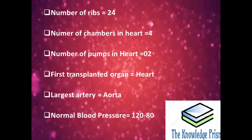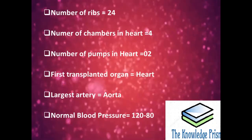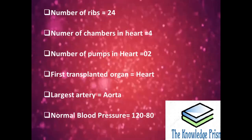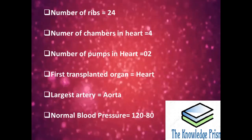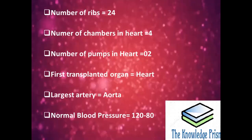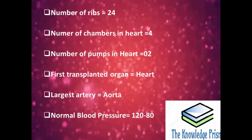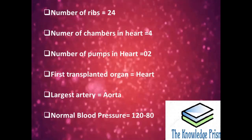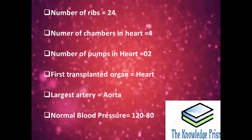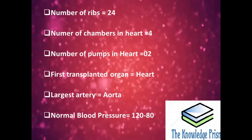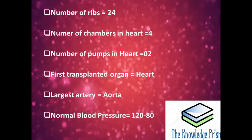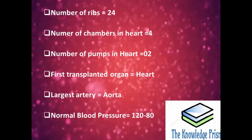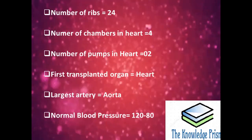Number of chambers in heart are 4. Number of pumps in heart are 2. First transplanted organ was heart. Largest artery is aorta. Normal blood pressure is 120 over 80.